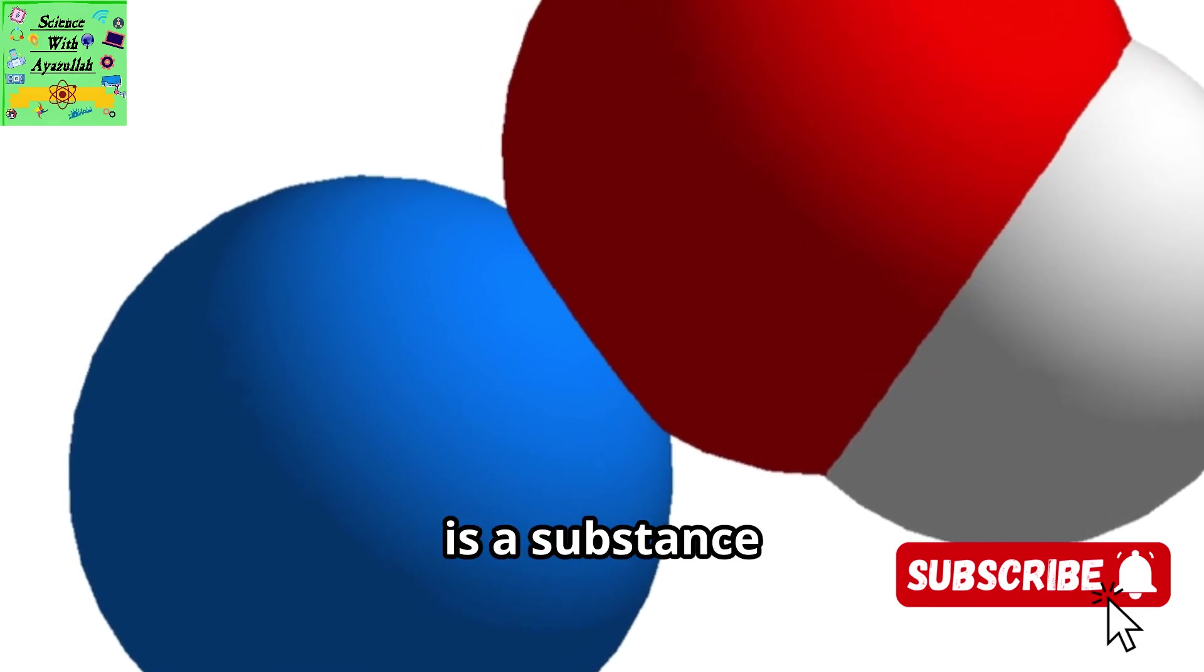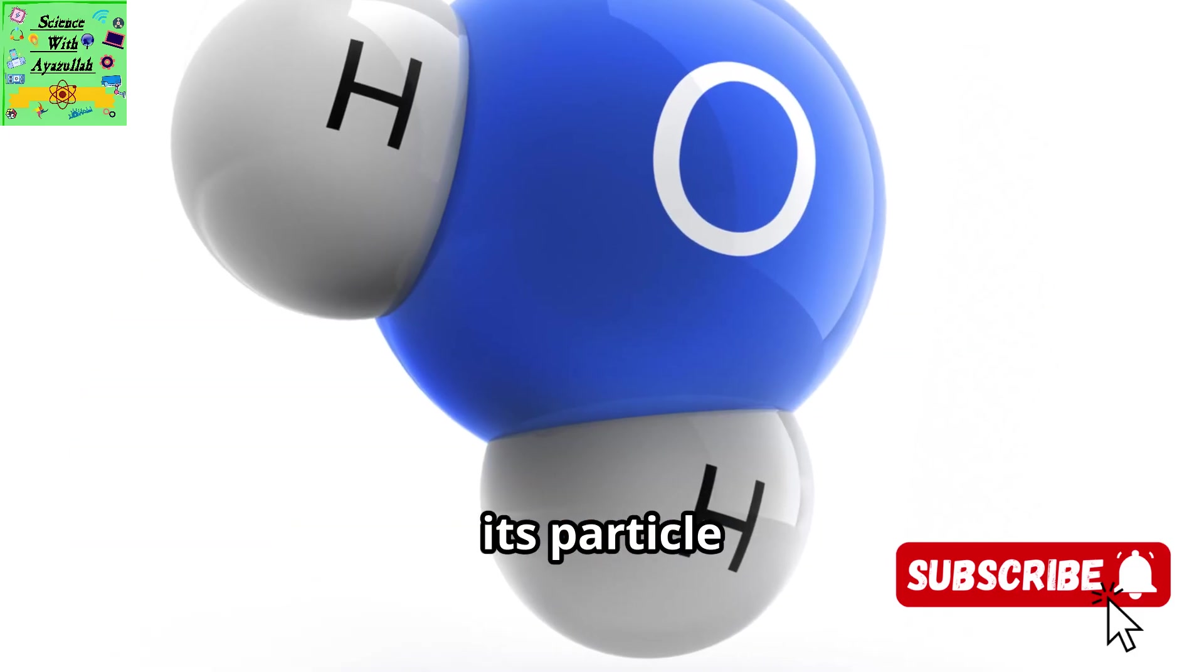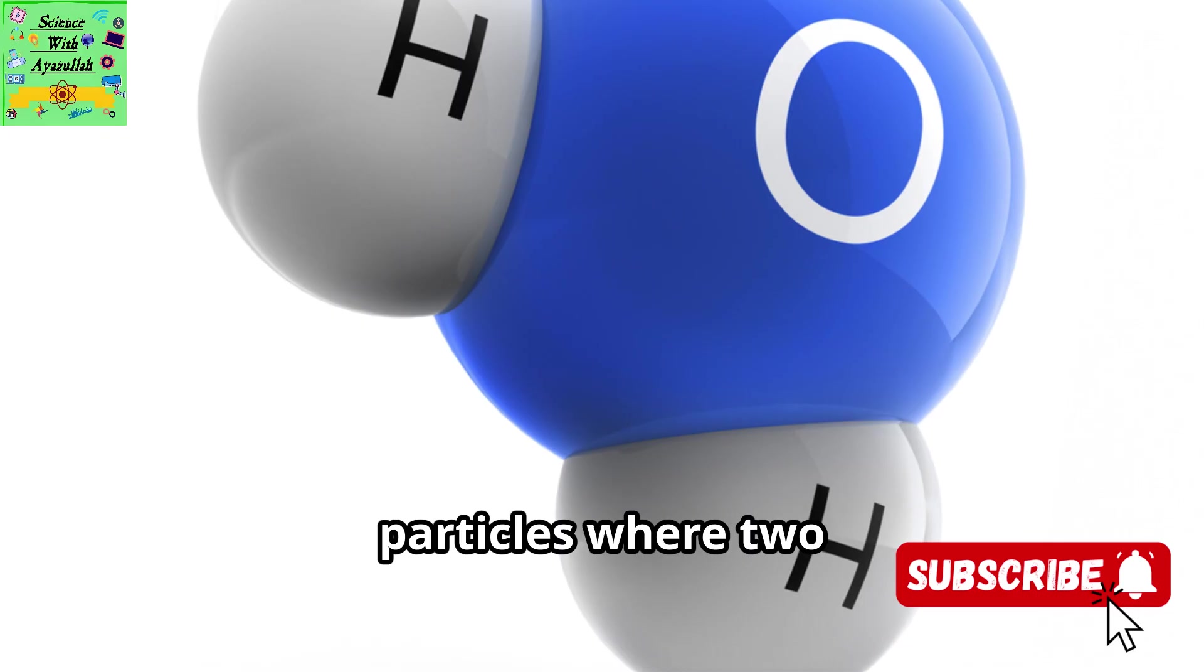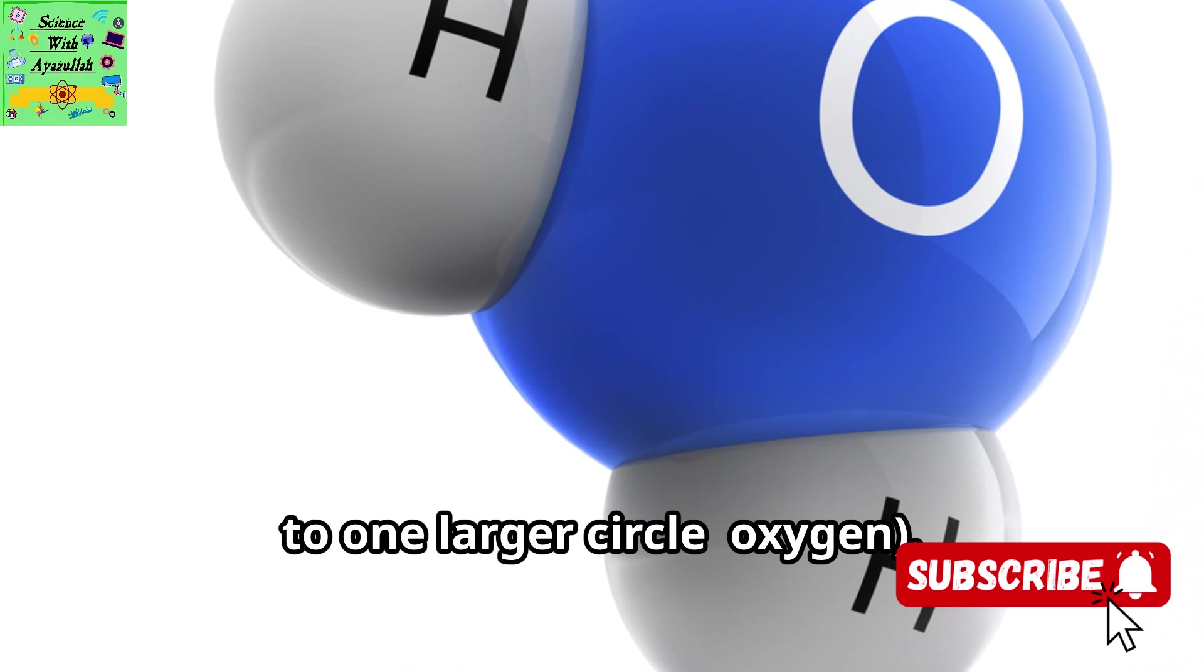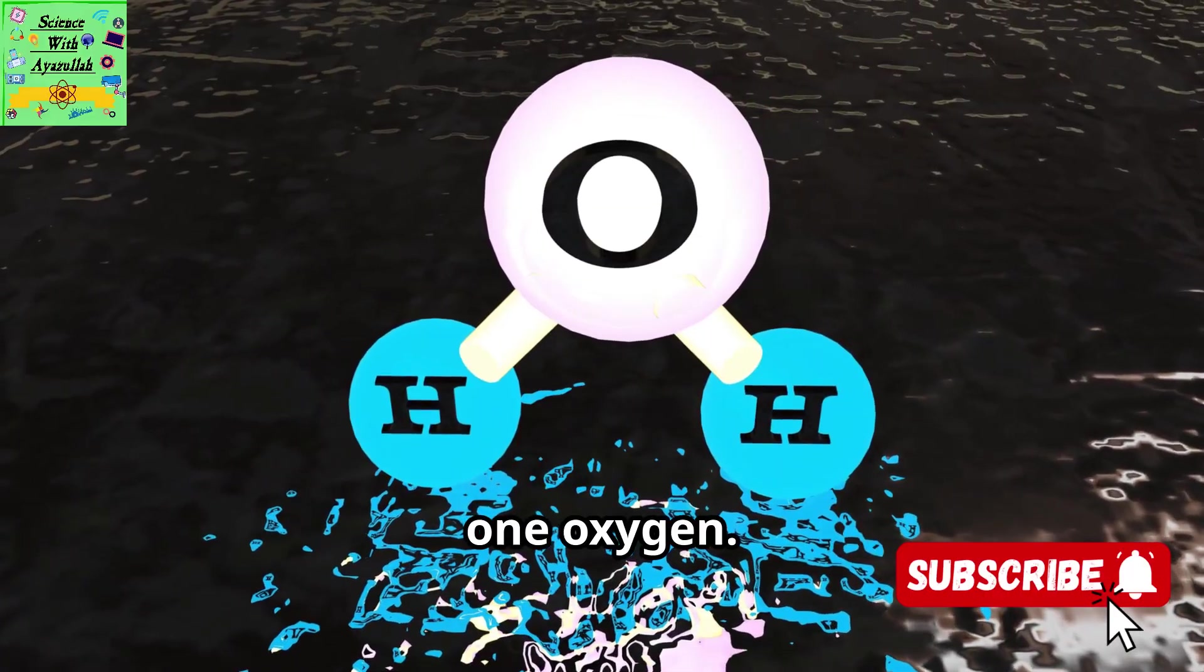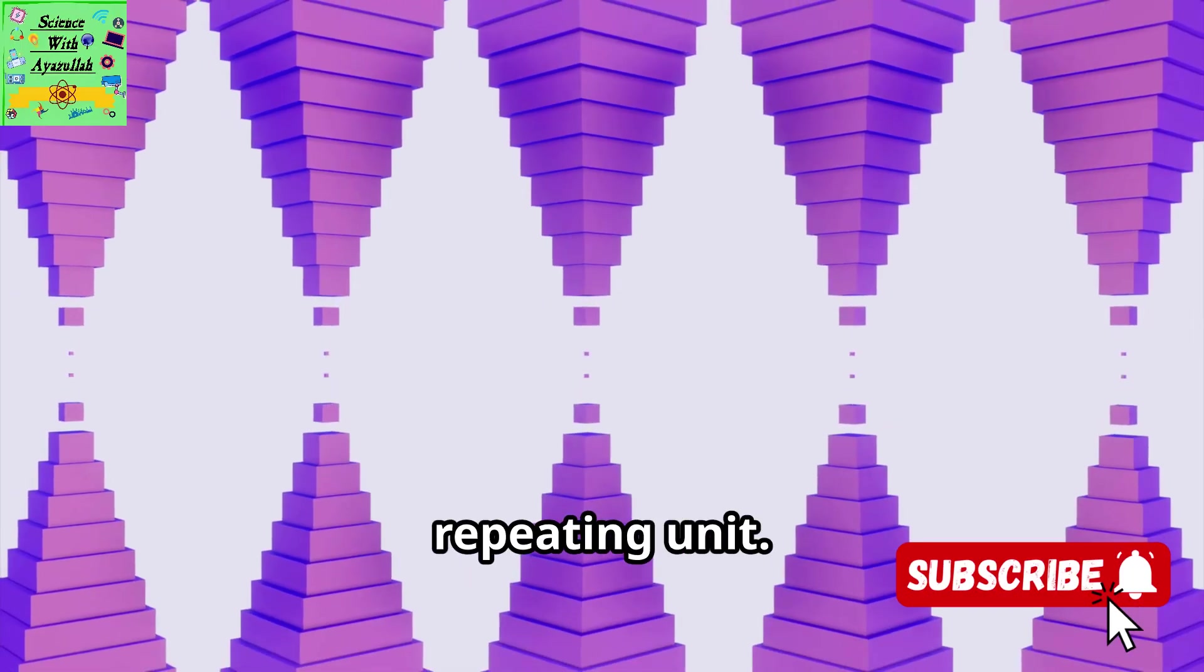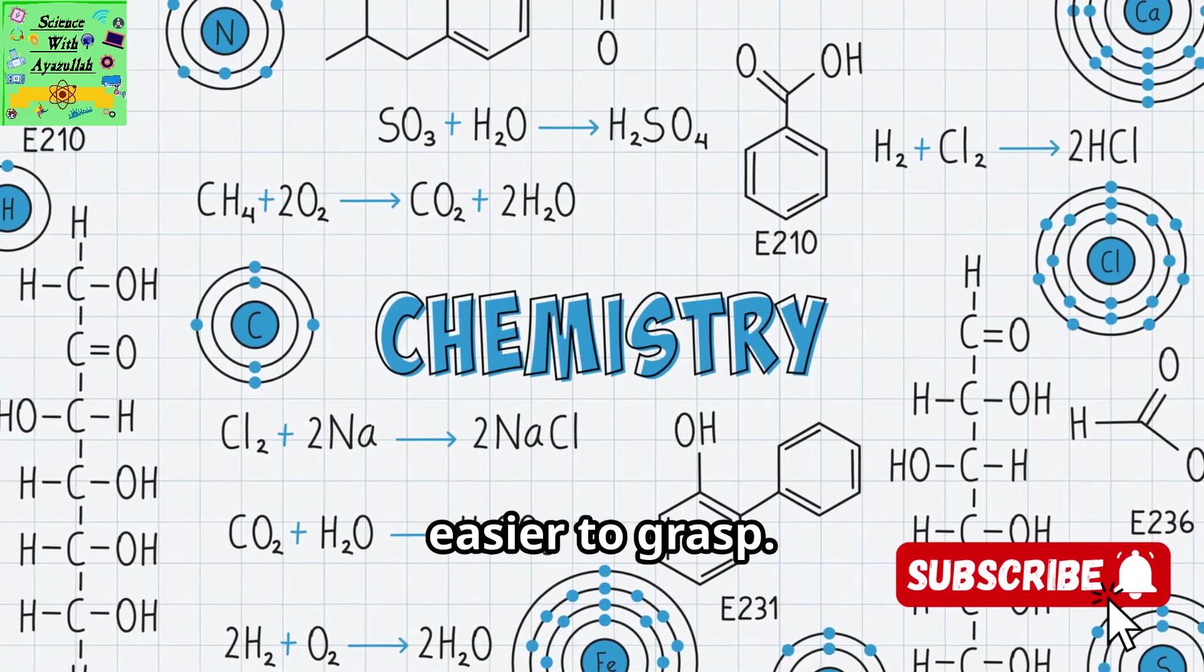A compound, on the other hand, is a substance where two or more different types of elements are chemically bonded together. So, its particle diagram will show particles made of different circles joined together. A diagram for water, H2O, would show particles where two smaller circles, hydrogen, are stuck to one larger circle, oxygen. Every single particle in the box would look identical to the others, two hydrogens, one oxygen. The key difference is that an element has only one type of atom, while a compound has two or more types of atoms bonded into a single repeating unit. These diagrams make the abstract idea of atoms and molecules visible and much easier to grasp.